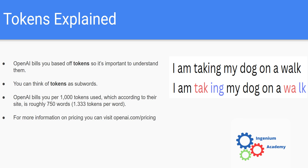So what are tokens? OpenAI says you can think of them as subwords, and that's true. OpenAI bills you per 1,000 tokens used, and the billing per 1,000 tokens changes based on the model that you use. If you use a more advanced model like GPT-4, it's going to cost more per 1,000 tokens than a cheaper model.